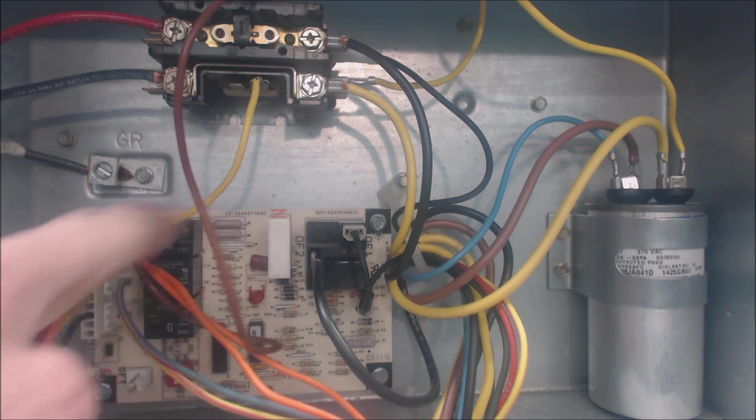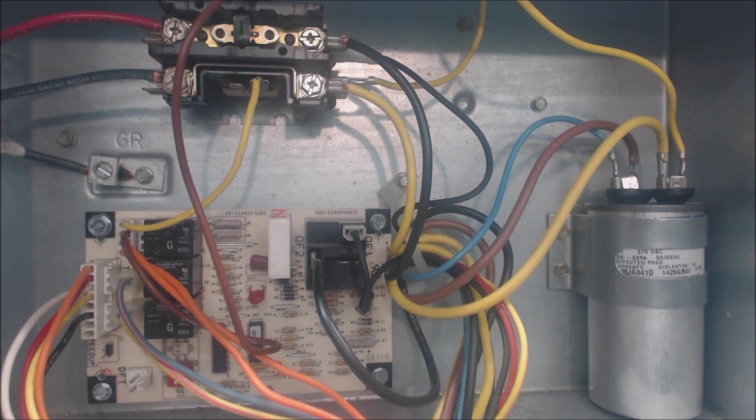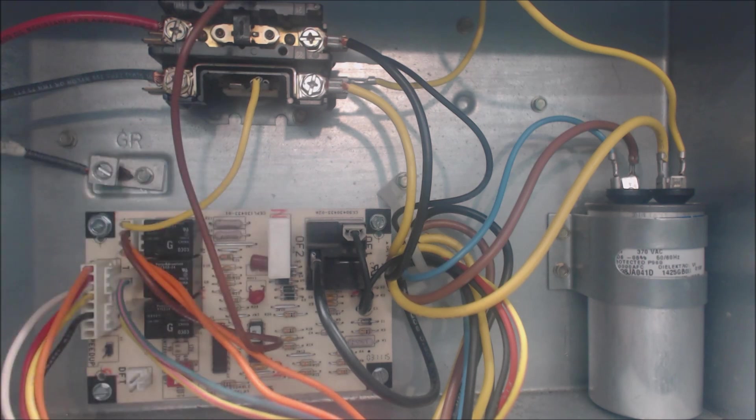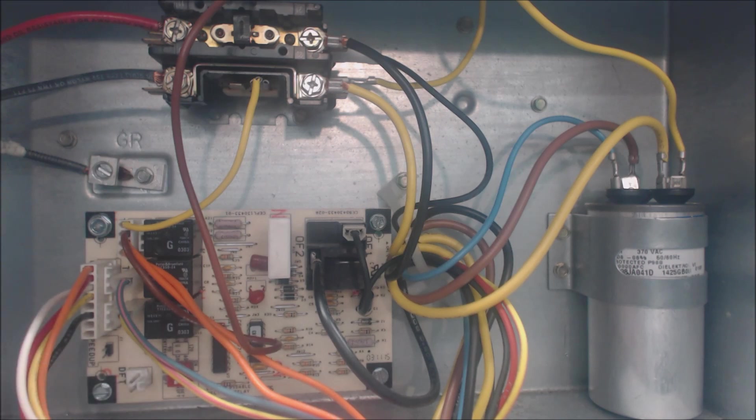then this board will power the reversing valve for cooling mode, shut the outdoor fan motor off, and it's going to send power through this W wire 24 volts to the indoor air handler in order to turn emergency heat on. That's what happens during defrost.